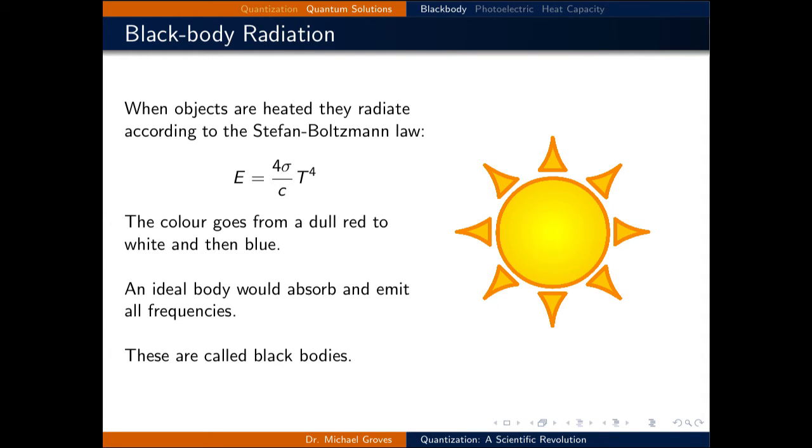The first physical phenomena we will explore that was inconsistent with classical mechanics is the spectrum emitted from a blackbody. When objects are heated, they radiate according to the Stefan-Boltzmann law, which is E equals 4 sigma divided by C times T to the power of 4. And this is where sigma is the Stefan-Boltzmann's constant, E is the total radiant energy density, C is the speed of light, and T is the temperature.